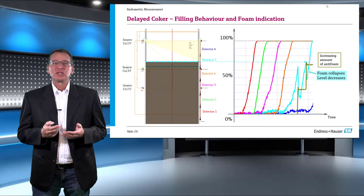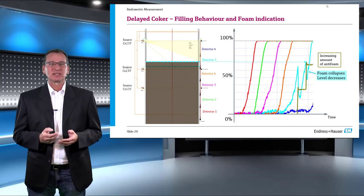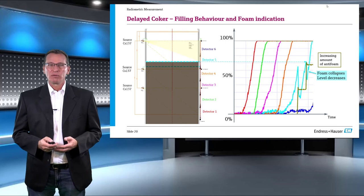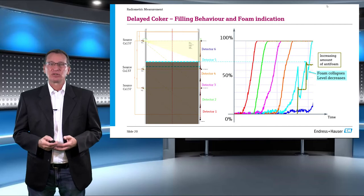The filling continues further and the action is repeated when the level reaches the next set point. This time we can notice a smaller fall in level compared to the last time, although the magnitude of anti-foam injection has doubled. This indicates the reduction in foam level formation compared to the first time.